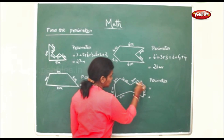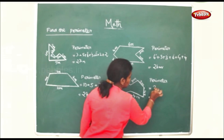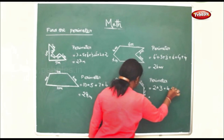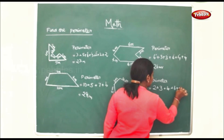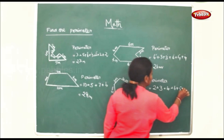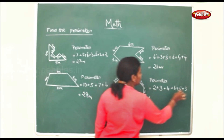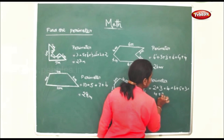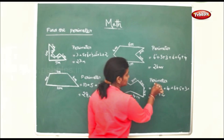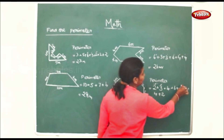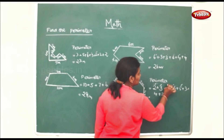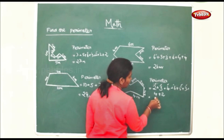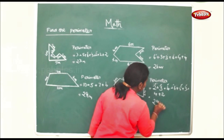For this figure, perimeter means sum up all the sides. Starting from here: 2 plus 3 plus 4 plus 6 plus 5 plus 3 plus 4 plus 2. So 2 plus 3 is 5, plus 5 is 10, plus 6 plus 4 is 20, plus 3 is 23, plus 4 is 27, plus 2 is 29 meters.